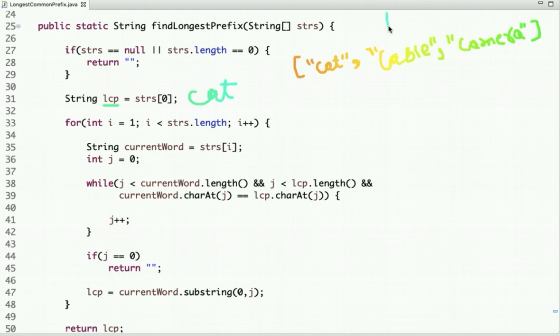And then I start traversing the array from index 1 till the length of the array. Now the current word - this variable in which I have assigned the string present at that index - so the string present at first index is 'cable', so I assign 'cable' here.